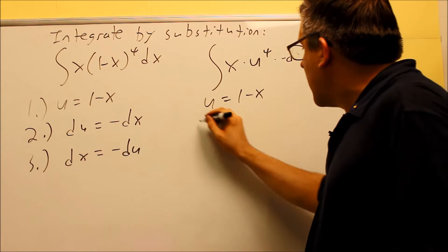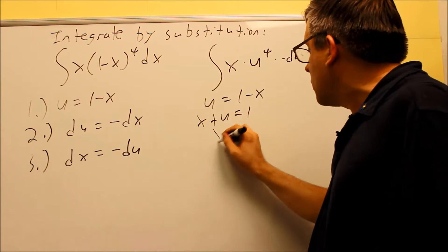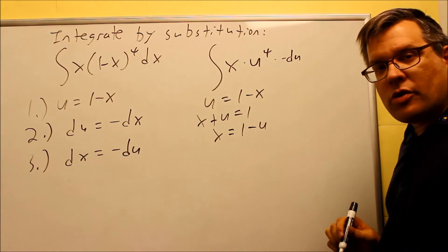So I have U equals 1 minus X, I'm going to solve that for X. I'm going to add X to the other side, so I have X plus U equals 1, and then subtract, so I get X is equal to 1 minus U.